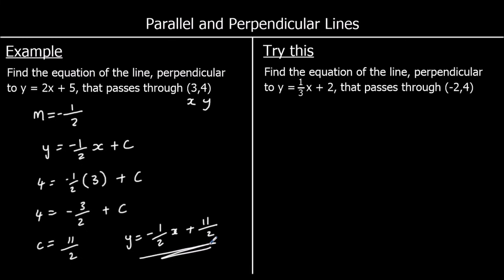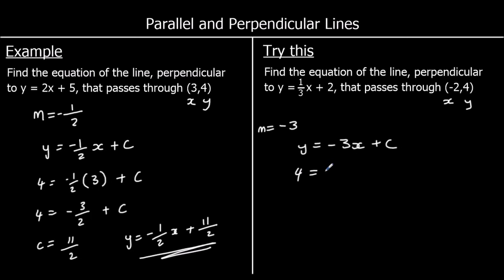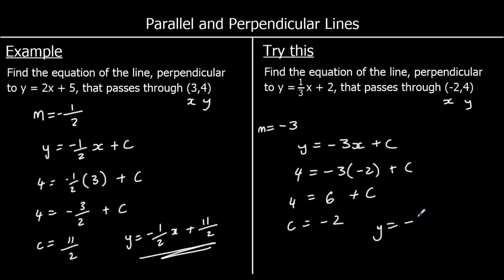The perpendicular gradient of one third is the negative reciprocal, which is minus three. So we have y equals minus three x plus c. Using the given coordinates — y is four and x is negative two: four equals minus three times negative two plus c, giving four equals six plus c. Taking six away from both sides, c is negative two. So y equals minus three x minus two.